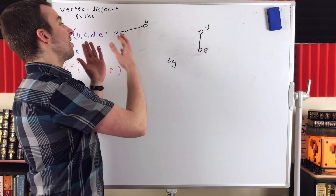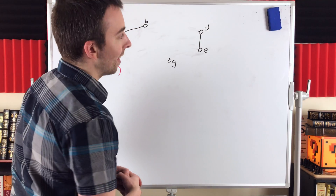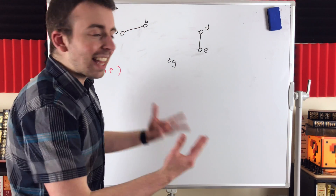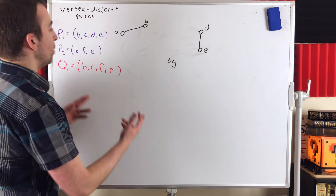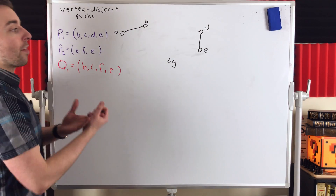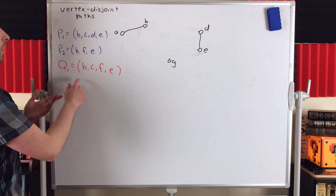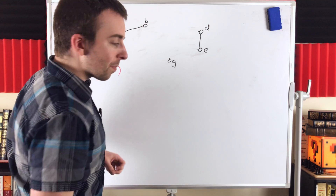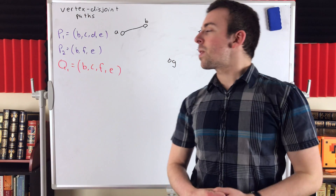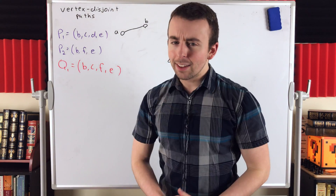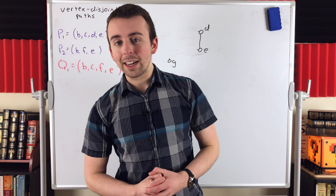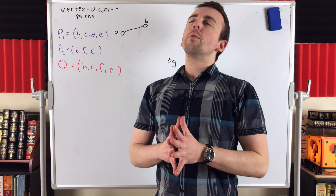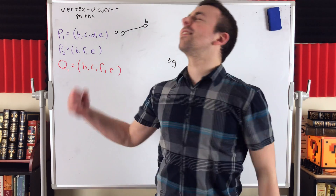And of course, there is a maximum number of internally disjoint paths connecting two vertices in a graph. You can't just pick any paths you want and reach that maximum, as we saw with Q1. We've got to be a little bit smarter to find the maximum number. I hope this video helped you understand what vertex disjoint paths are in graph theory. Let me know in the comments if you have any questions or video requests. Thank you very much for watching. I'll see you next time, and be sure to subscribe for new lessons every two days.